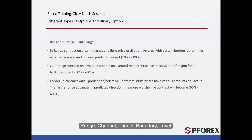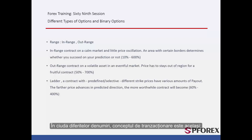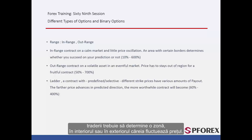Range, Channel, Tunnel, Boundary, and Level — despite these different names, the concept of trading is still the same. Traders have to determine a region that the price fluctuates inside or outside. This type is divided into two types: an inside range, or in-range, and an outside range, or out-range.